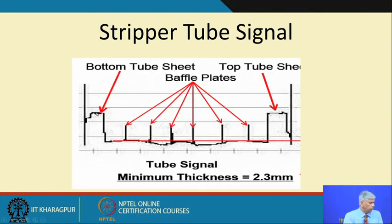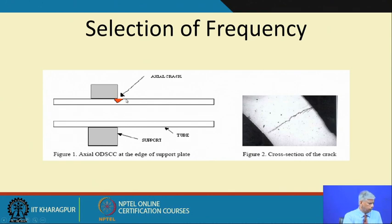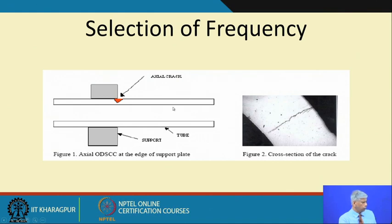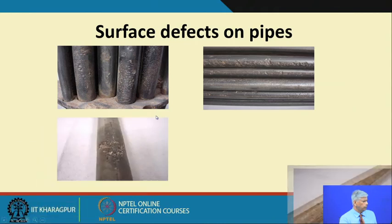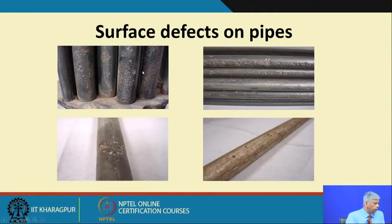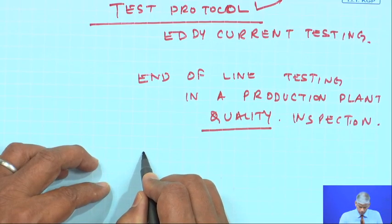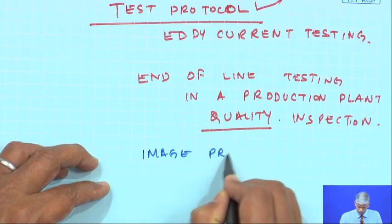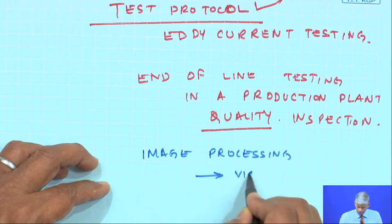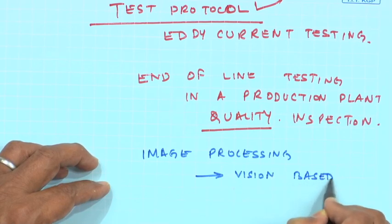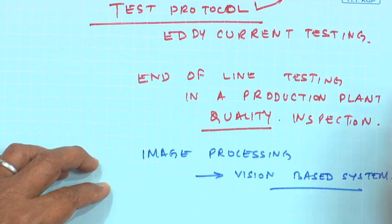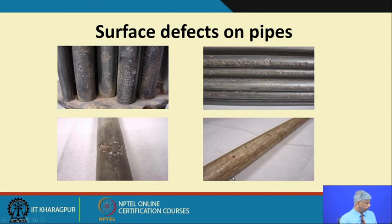In tube signals, there is a minimum thickness to consider, and cracks and their cross-sections can be identified. This method can be used to select the appropriate probe depending on crack location and required diameter. Surface defects on a pipe can be seen visually or through image processing with vision-based systems, and eddy current can also be used to monitor them.